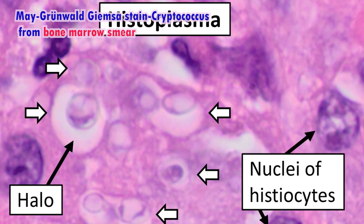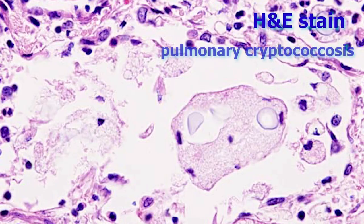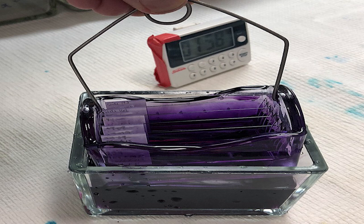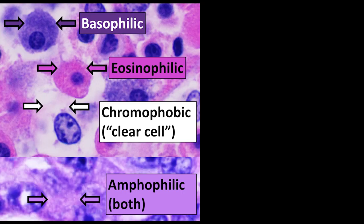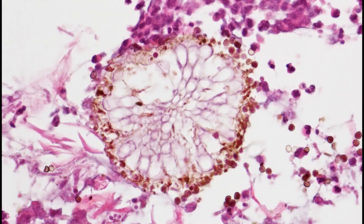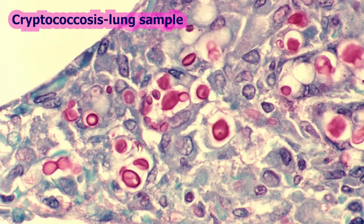Hematoxylin and Eosin (H&E) stain is one of the principal tissue stains used in histology and the most widely used stain in medical diagnosis. H&E is a combination of two histological stains: hematoxylin and eosin. Hematoxylin stains the cell nuclei purplish-blue, while eosin stains the extracellular matrix and cytoplasm in pink, with other structures taking on different shades and combinations of these colors. Fresh yeast cells are stained purple.